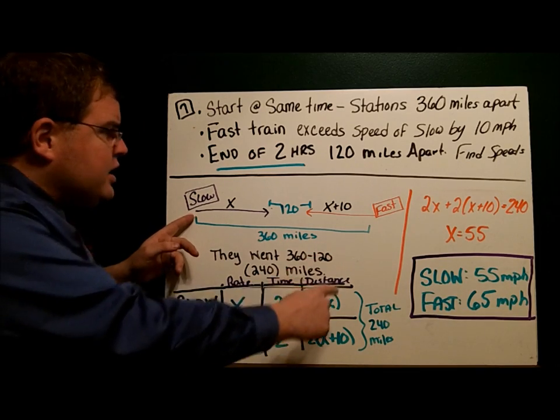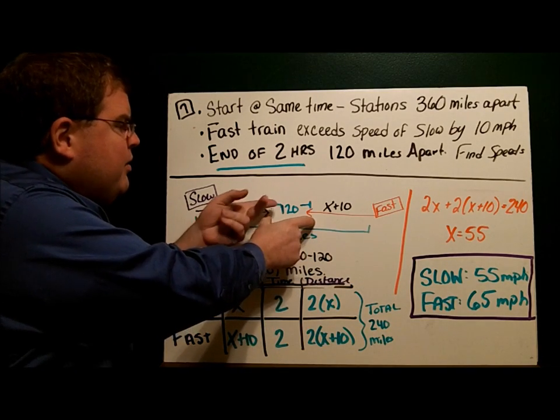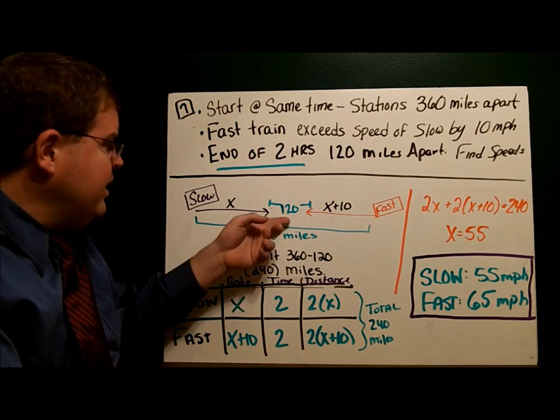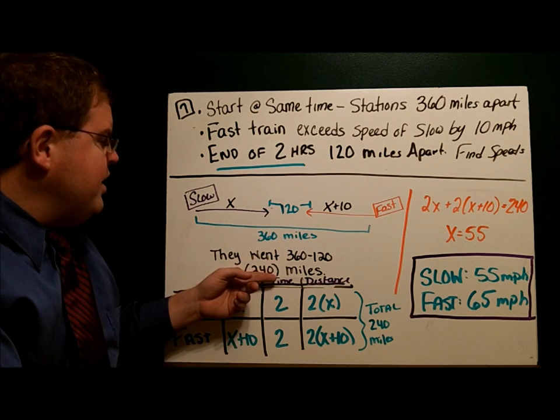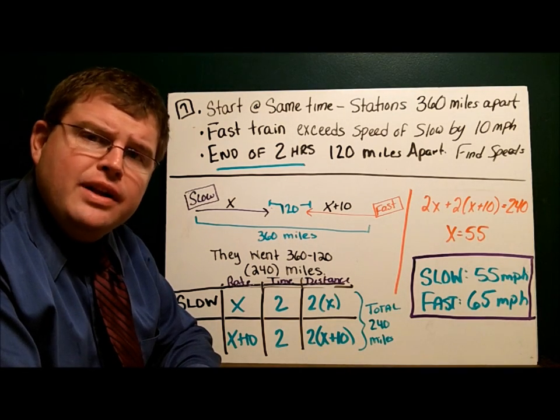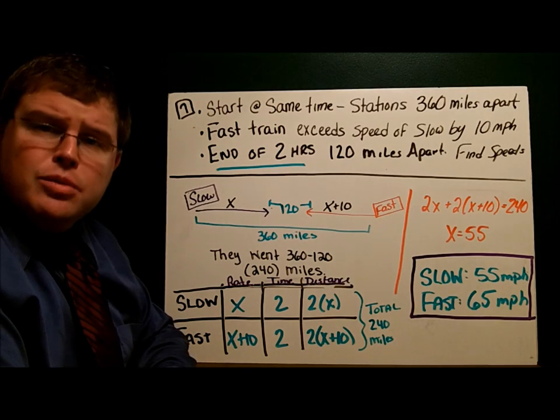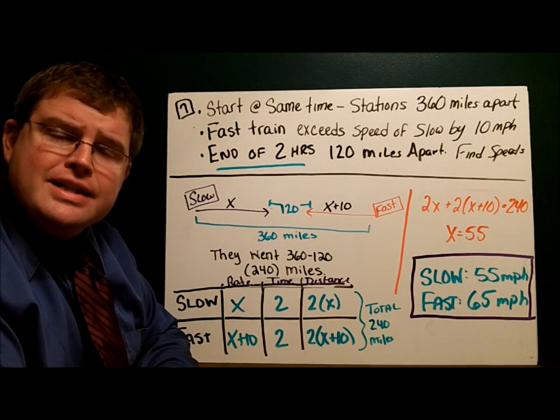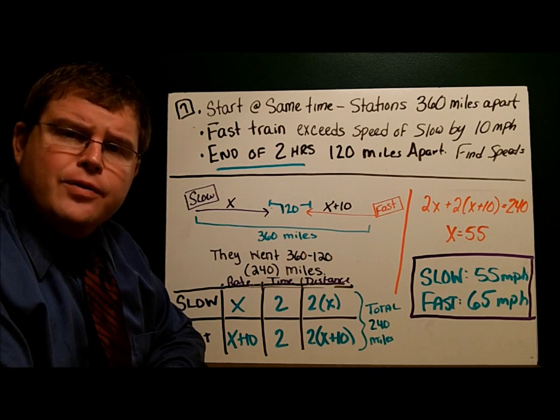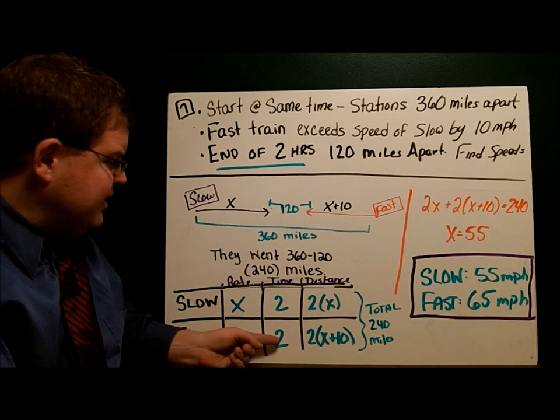Slow train, fast train, they're 360 miles apart. They travel for two hours. Now there's still 120 miles in between them, which means if it was 360 miles total and there's still 120 miles to go, they've traveled 240 miles so far. Let's use this information to fill in our table. Slow train, fast train. We don't know the speed of the slow train, so we'll call it X. The fast train is 10 miles per hour faster, so X plus 10. The trains traveled for two hours, so our time for each is 2, and rate times time gives us our distances.